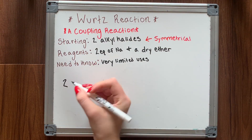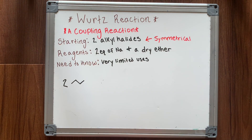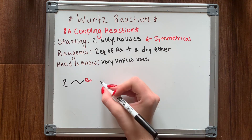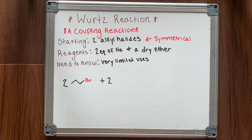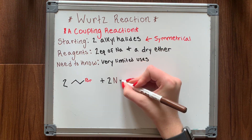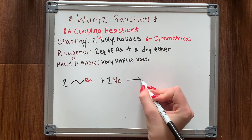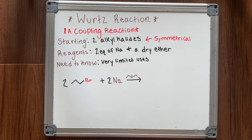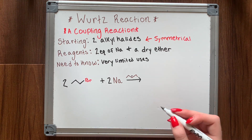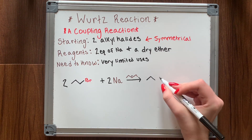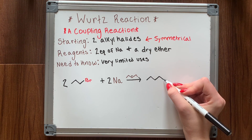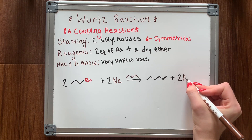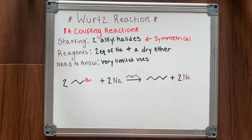Finally, we have the Wurtz reaction, which is a coupling reaction. In regards to making alkanes, it is very limited because it only works if you have two symmetrical alkyl halides. If your alkyl halides are not symmetrical, you will get an uncontrollable mix of products. Essentially, you treat your two alkyl halides with two equivalences of sodium in dry ether.